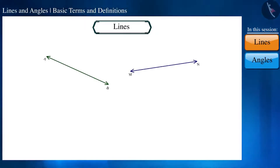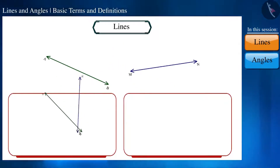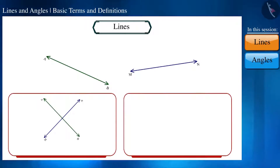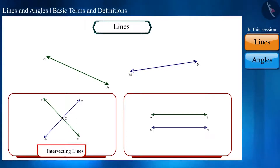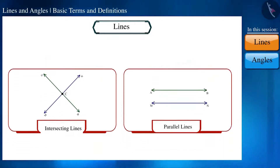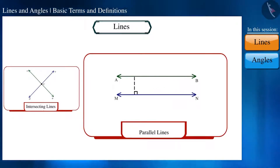Let's take two lines AB and MN. In how many ways can we draw them? We can draw them in two different ways. First, both of them intersect each other — here point C is their point of intersection, so they are called intersecting lines. Second, they do not intersect each other — that is, they are parallel to each other. The length of the common perpendicular at different points of these two parallel lines will always be the same.